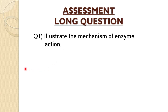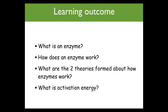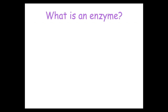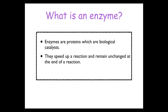We're going to discuss enzyme structure and the mode of action. By the end of this lesson you'll know what an enzyme is, how an enzyme works, what the two theories about how enzymes work are, and what activation energy is. Enzymes are proteins which are biological catalysts — a catalyst alters the rate of reaction without itself undergoing permanent change. Enzymes speed up a reaction and remain unchanged at the end; they don't make a reaction happen, they simply change the speed of reactions that already occur.